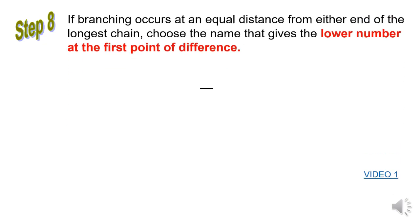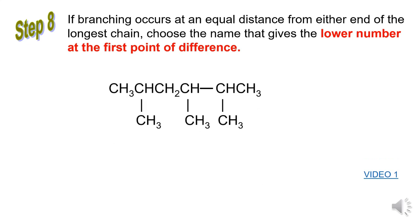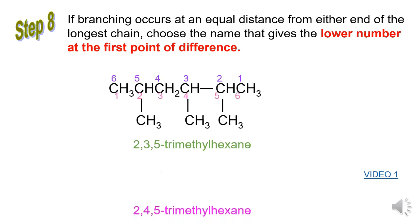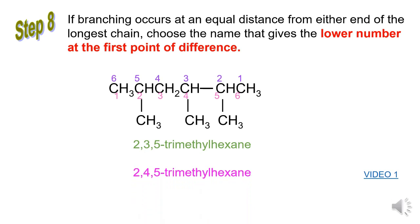Step 8: If branching occurs at equal distance from either end of the longest chain, choose the name that gives the lower number at the first point of difference. The structure is given. The first option: start numbering the longest carbon chain from right to left — the IUPAC name is 2,3,5-trimethyl-hexane. The second option: start numbering from left to right — the IUPAC name is 2,4,5-trimethyl-hexane. The correct IUPAC name is option 1 because based on Step 8, we always give a lower number to the substituent group.